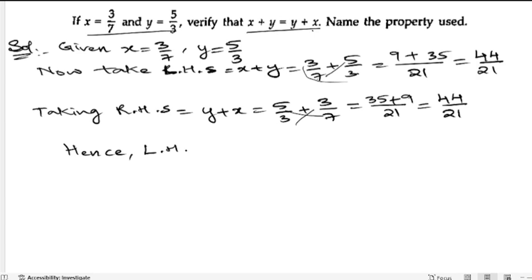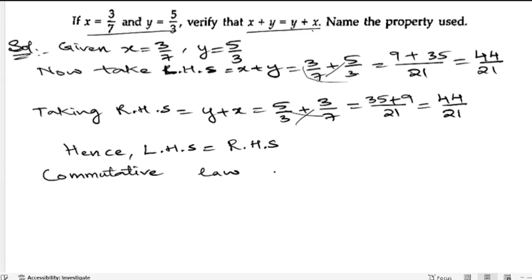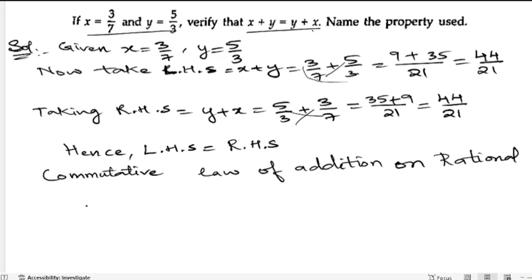Hence LHS is equal to RHS. And we need to name the property. Since we know that a plus b is equals to b plus a, that is a commutative property. So let us write down: Commutative law of addition on rational numbers.